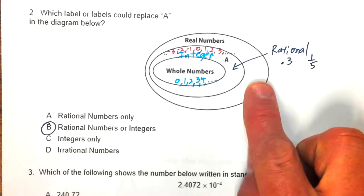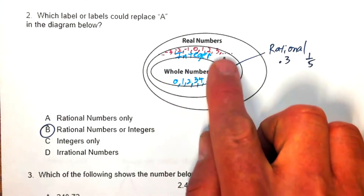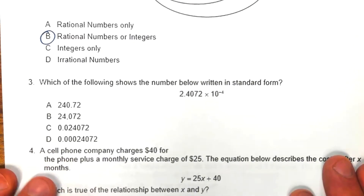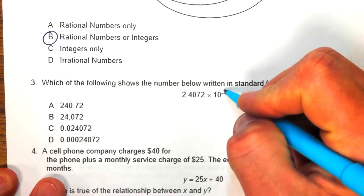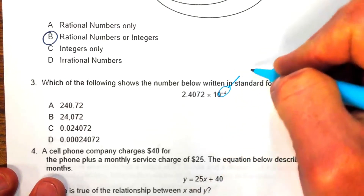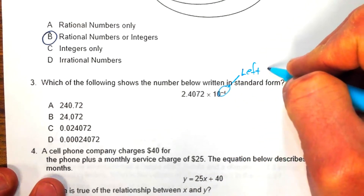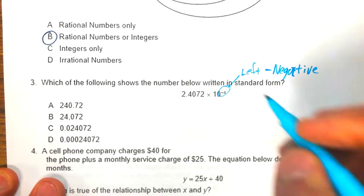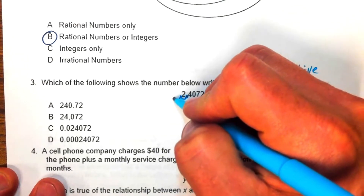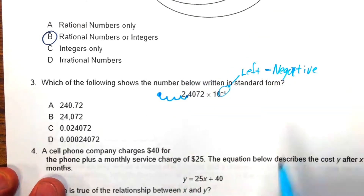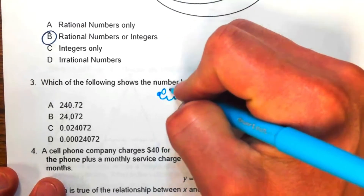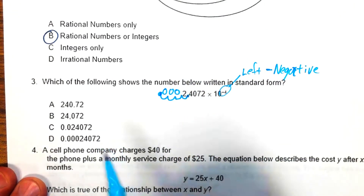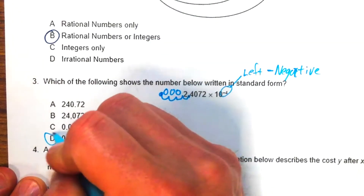Problem three: write the number in standard form. Real numbers also include irrationals, which are separate from rationals. For a negative exponent, we move the decimal to the left — four places in this case. Empty loops get zeros, so we need three extra zeros: 0.0002407. That gives us answer choice D.